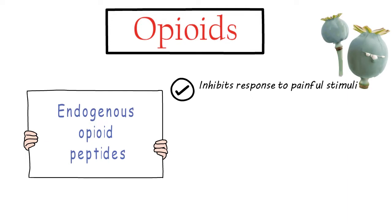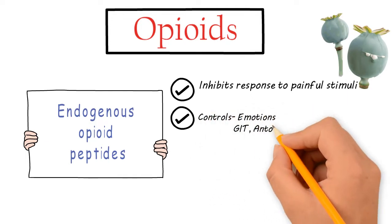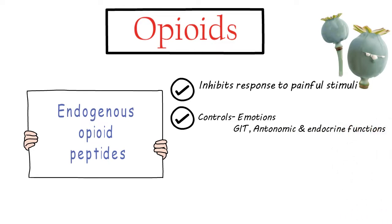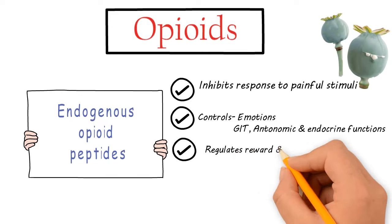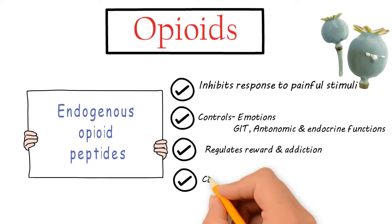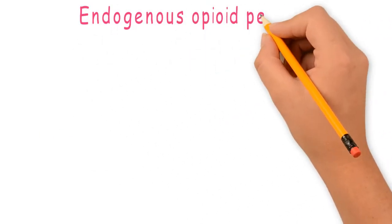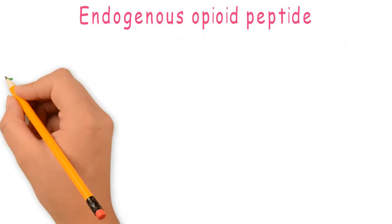Opioids possess certain characteristics: they inhibit responses to painful stimuli, they control emotions, certain GI tract activities, and autonomic and endocrine functions. They also participate in the reward pathway and are responsible for addiction. Additionally, they control learning, memory, and cognition.